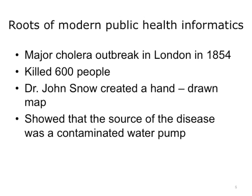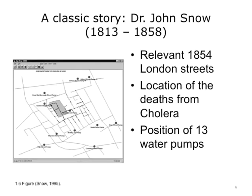The roots of modern public health informatics may be traced back to the major cholera outbreak in London in 1854, when John Snow used what can be thought of as the first geographical information system (GIS). He drew by hand and plotted the relevant 1854 London streets, the location of the deaths, and the position of the thirteen water pumps. He then discovered that almost all of the deaths were around the same water pump, took the map to city authorities, and convinced them the deaths were coming from this particular water pump. The authorities removed the handle and suddenly the spread of cholera stopped.